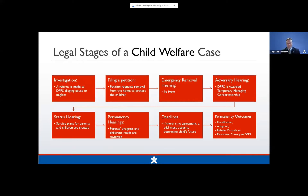There are deadlines — if there is no agreement for a final order, there must be a trial, and that determines the placement of the children moving forward. Permanency outcomes include reunification, adoption, relative custody or adoption, or maybe even permanent custody to DFPS, which isn't a great outcome.